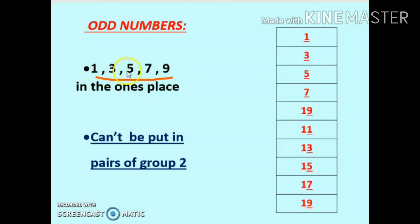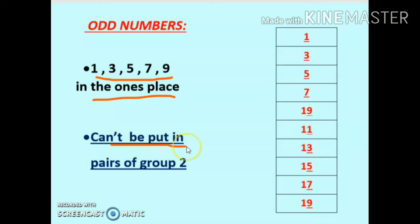Next we come to odd numbers. As per the definition, if 1, 3, 5, 7, or 9 are at the ones place, then it is called an odd number. Or we can say: numbers which cannot be put into pairs of groups of 2 are called odd numbers.